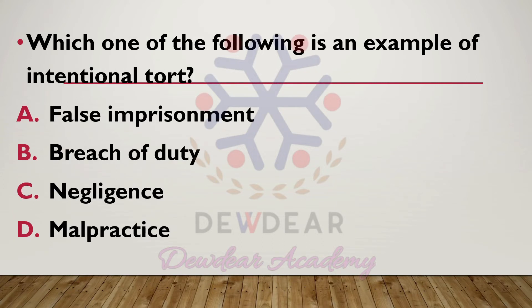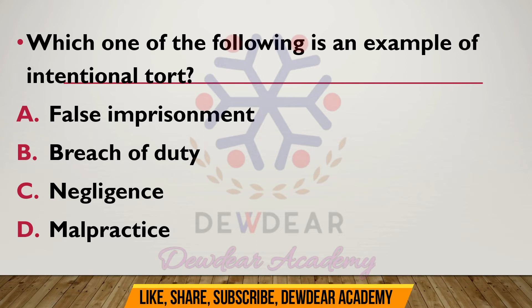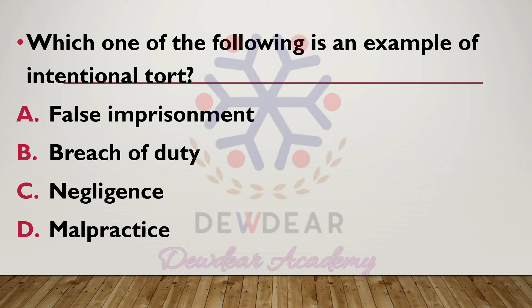Which one of the following is an example of intentional tort? Options are: false imprisonment, breach of duty, negligence, malpractice. The correct answer is option A — false imprisonment is an example of intentional tort.